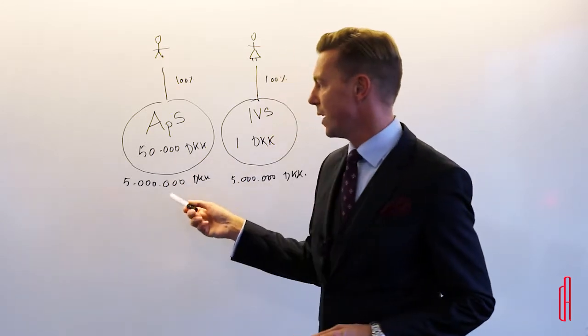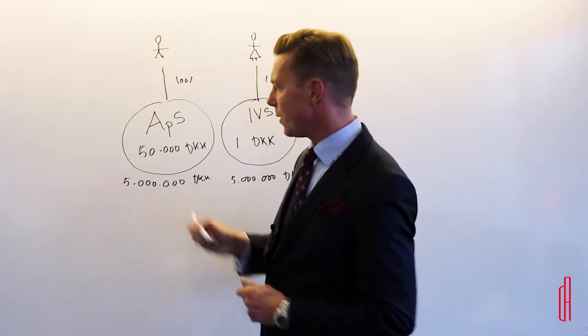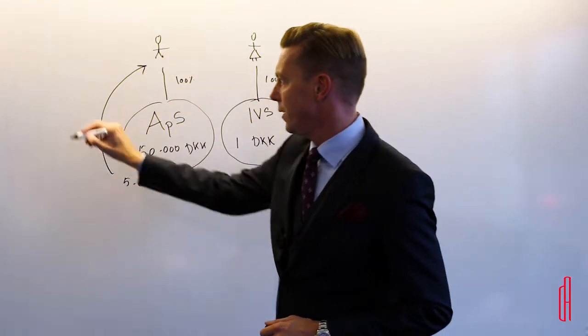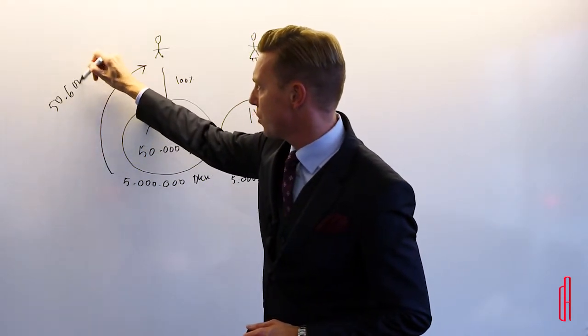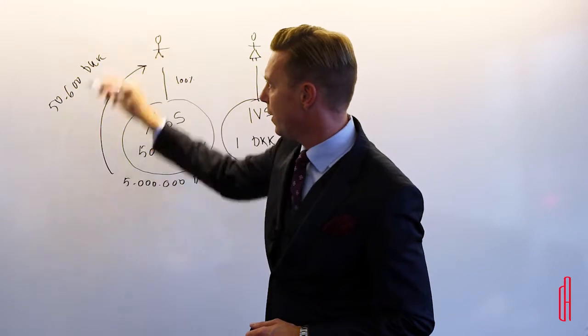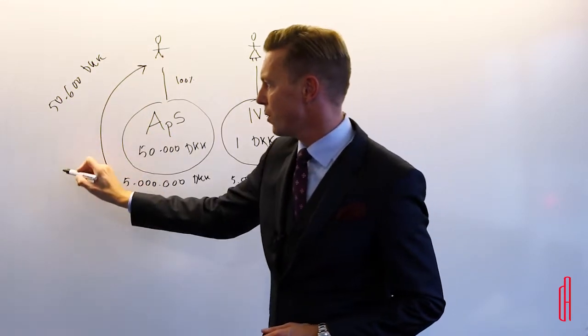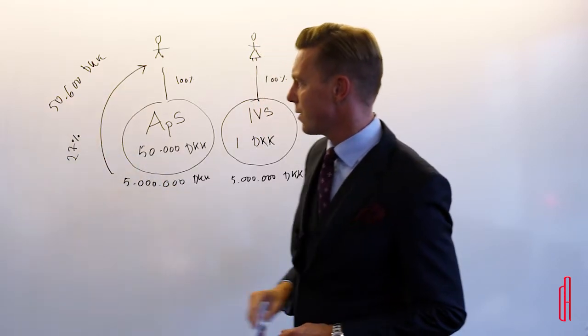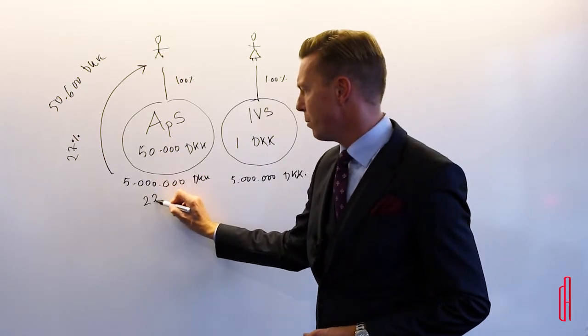The other way is to take a dividend. If he takes a dividend here, then in Denmark, let's assume that he's taxable in Denmark, then he is allowed to take up to 50,600 Danish kroner. If he takes out a dividend from one kroner to 50,600, he will have to pay 27% in tax.